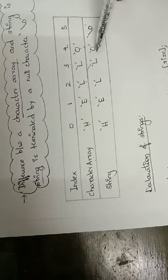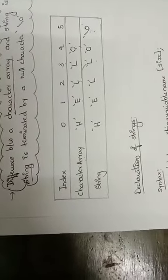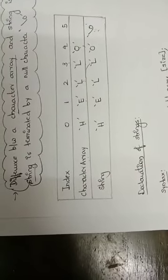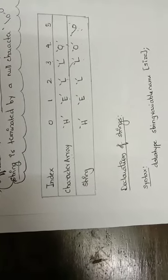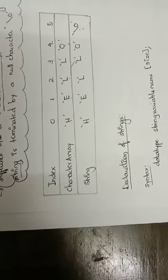So this is the difference between a character array and a string. In a character array, it is not terminated by a null character. But in a string, it is always terminated by a null character. This is what strings are. Now we are going to look at how you can declare a string.